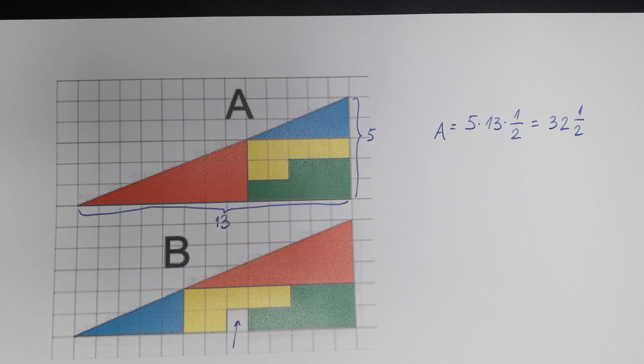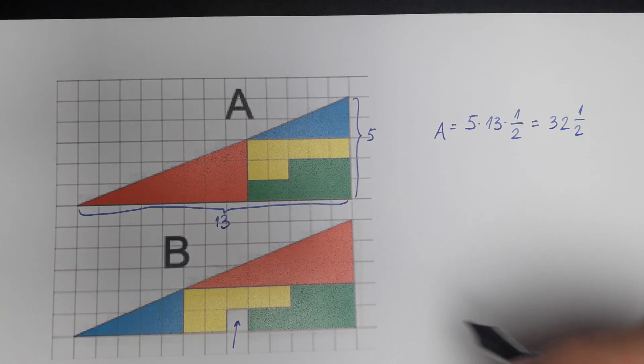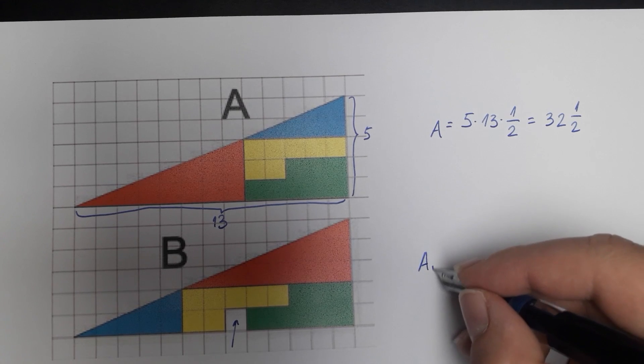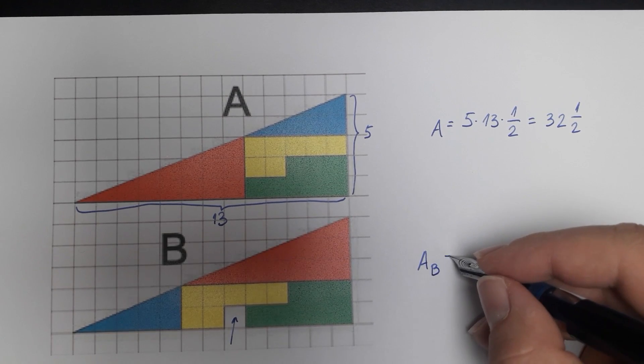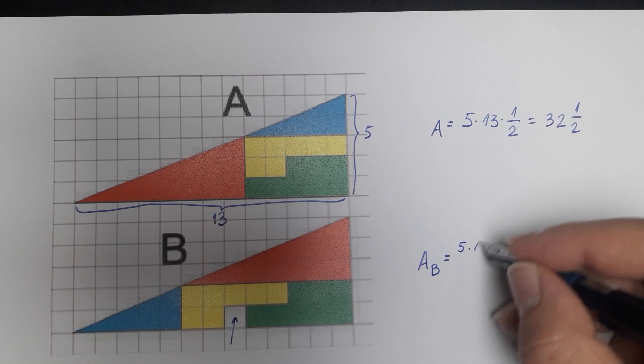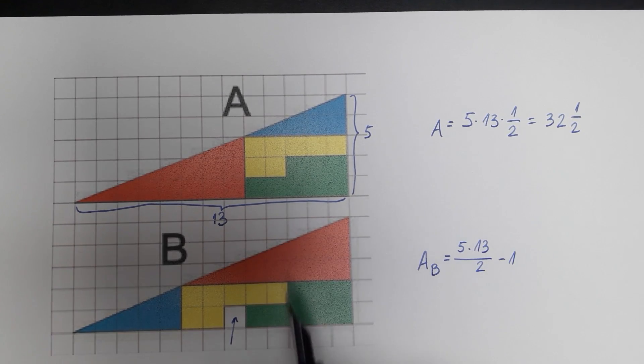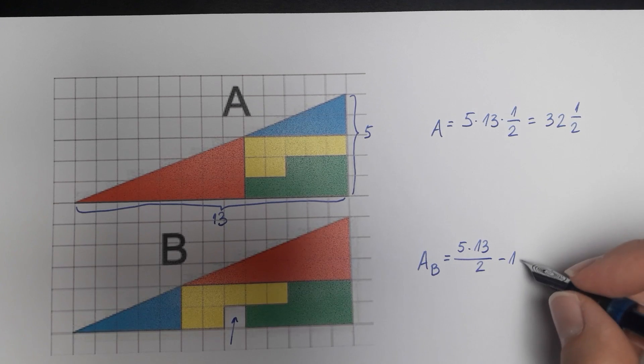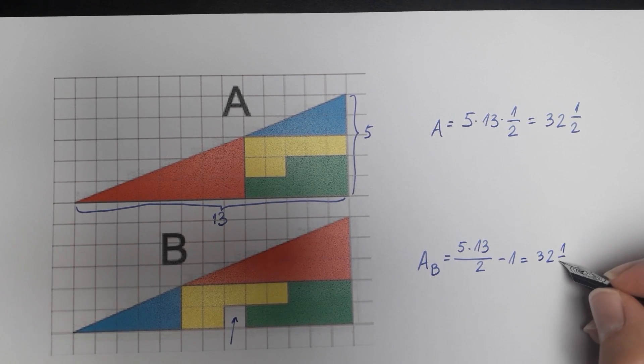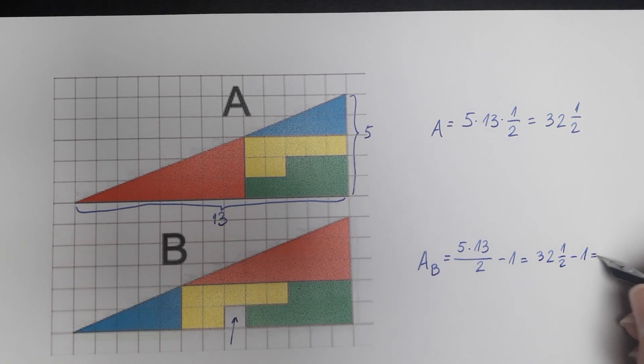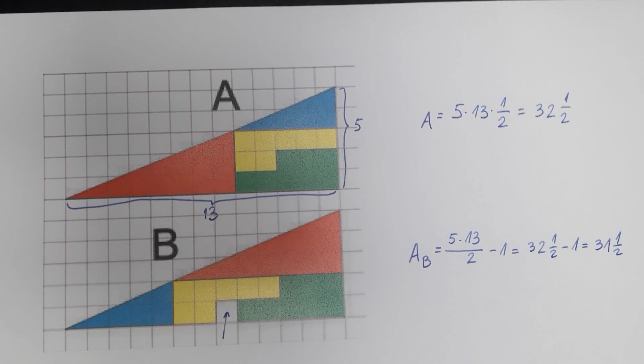And when you look at triangle B, it is going to be area of triangle B. It is 5 times 13 divided by 2 minus one unit here. This is equal to 32 and a half units minus one unit which is equal to 31 and a half units.